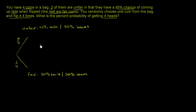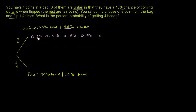Now I want to know, in either of these scenarios, what is the percent probability of getting four heads? If given I've got the unfair coin, the probability of getting four heads is going to be 55% for each of those flips. So the probability of getting exactly four heads is going to be 0.55 × 0.55 × 0.55 × 0.55. So the probability of picking an unfair coin and getting four heads in a row is 3/4 times 0.55 to the fourth power.